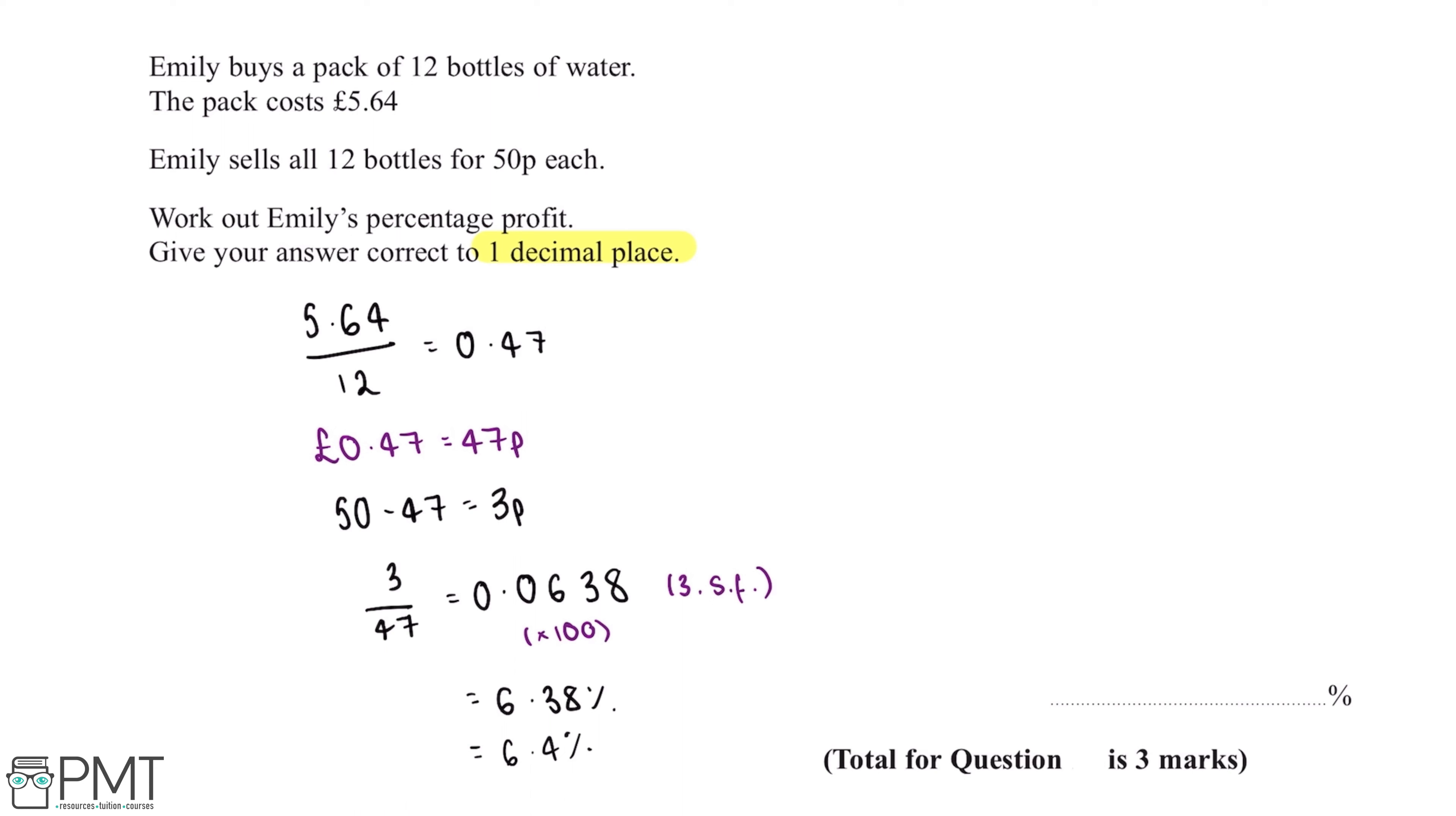So our final answer is 6.4%. Now this question is worth 3 marks. We'll get 1 mark for comparing the price of the individual bottles. We'll get a 2nd mark for using a suitable method to work out the percentage profit. And we'll get our 3rd mark for the correct answer to 1 decimal place.